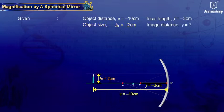We have to find out the distance of the image from the pole, V, and the height of the image, H2.